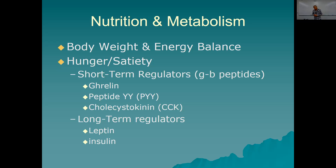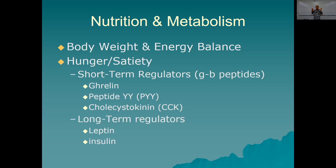Leptin is made by adipose tissue and tells your brain you're full, though it's a weak satiety signal. Mostly leptin signals to tell your brain how much fat you have — the more fat you have, the more leptin you make. This is particularly important for women, who may need to supply food for another human being. Insulin is also a satiety signal: after you've eaten, you make lots of insulin, and the more you eat, the more insulin you make, and the more it turns off your brain's hunger signal.